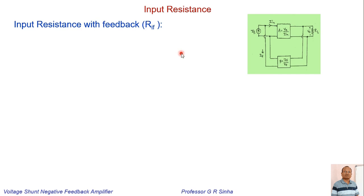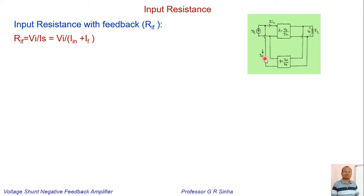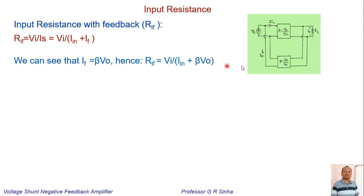Let us understand input resistance with feedback. We can say that RIF, the input resistance with feedback, is equal to the input voltage divided by IS. We consider IS because it is beyond the loop, outside the loop. So RIF equals VI divided by IS, where IS is divided into IN and IF. For negative feedback, IS equals IN plus IF. Since IF equals beta times VO, we can write RIF as VI divided by (IN plus beta·VO).